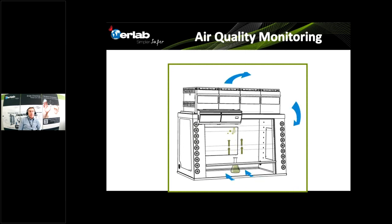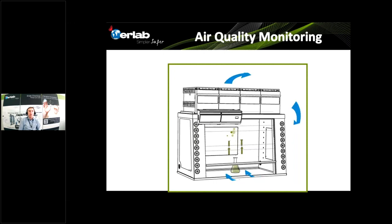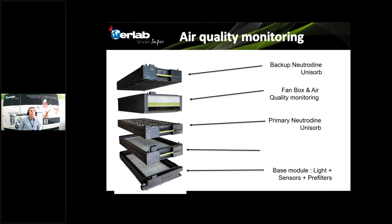We pay great attention to containment and filtration, but filter monitoring and air quality monitoring are also very important. There is nothing in the filter itself that tells you whether chemicals are exhausted from the fume hood. When you use a green fume hood, it embeds sensors that guarantee all the air recycled into the room is free of pollution. These sensors are located between a primary Neutrodine Unisorb filter and a backup Neutrodine Unisorb filter, so that if the detector senses pollution after the primary filter, the backup filter is still there to prevent any leakage into the room.